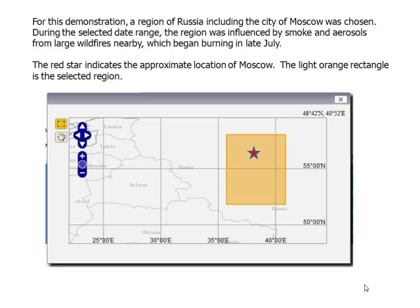For this demonstration, a region of Russia including the city of Moscow was chosen. During the selected date range, the region was influenced by smoke and aerosols from large wildfires nearby, which began burning in late July. The red star indicates the approximate location of Moscow. The light orange rectangle is the selected region.